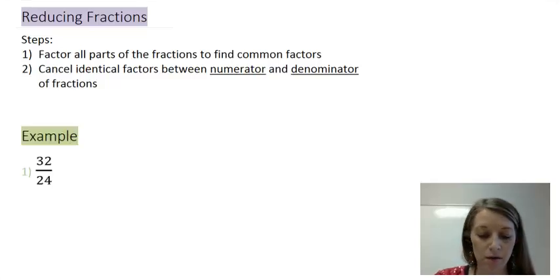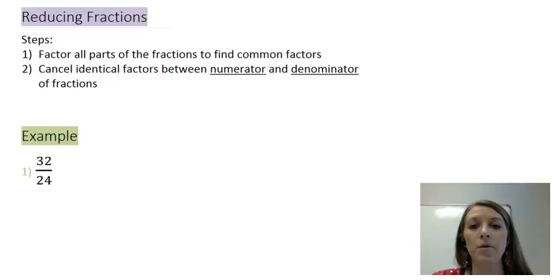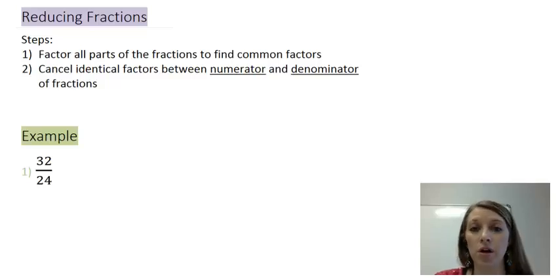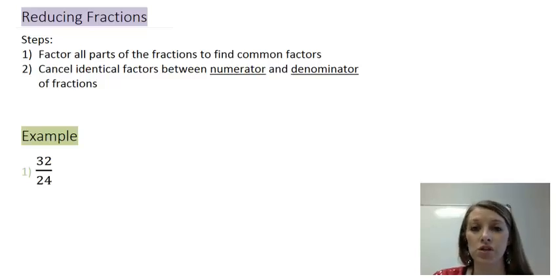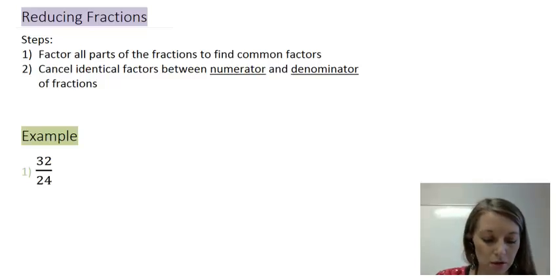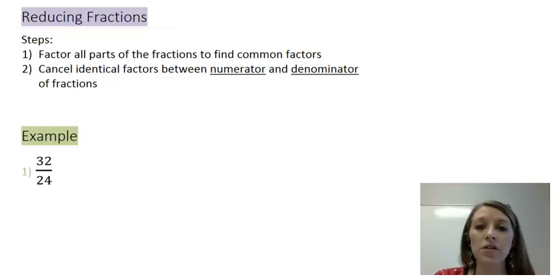The example I have is 32 over 24. Any time I pull up examples, I'm going to remind you to pause the video first and see if you can do it on your own. If you can do the example fully on your own, you can just go through the other examples without watching me. If you have difficulty, that's when you need to watch. Don't forget to check your answers at the end. So here with 32 over 24, I want to pick out the largest factor they have in common.